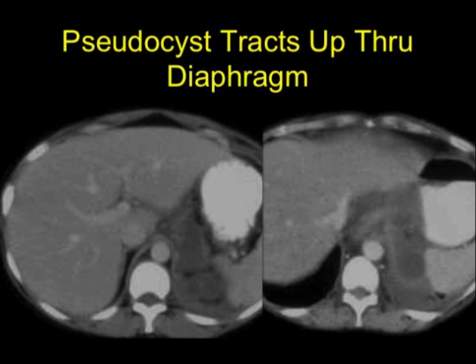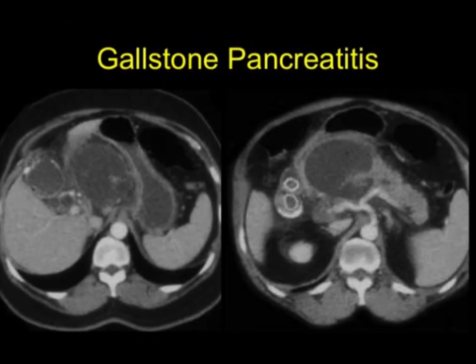In patients with gallstone pancreatitis, you can see lots of inflammation with secondary or primary involvement of the gallbladder. Since gallbladder disease is a common cause of pancreatitis, when you're evaluating a pancreatitis case you want to look carefully at the gallbladder, as there may be marked gallbladder inflammation as well.